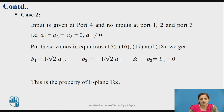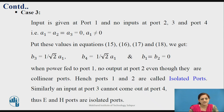The output at port 3 and port 4 is equal to 0. Consider case 3: input is applied to port 1 and the other ports are equal to 0. Putting all these values, you get B3 equal to B4 equal to 1 by root 2 times A1. That is, when power is fed to port 1, there is no output at port 2 even though they are collinear ports. Thus it is like a magic, and therefore these are called isolated ports. Similarly, if the input is applied to port 3, you do not get any output at port 4 — thus E and H ports are also isolated ports.